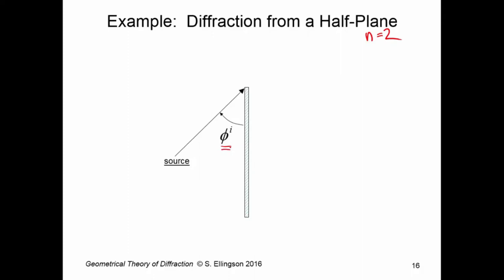φ super i is defined as the angle in the plane perpendicular to L hat, the edge tangent, and measured from the most directly illuminated face. So here, this face is the face that's most directly illuminated, it's the one that faces the source.